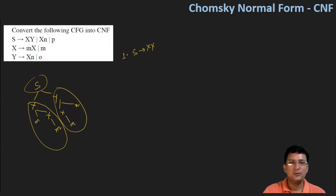Production 1 is S produces XY. Production 2 is S produces Xn. Production 3 is S produces small p.